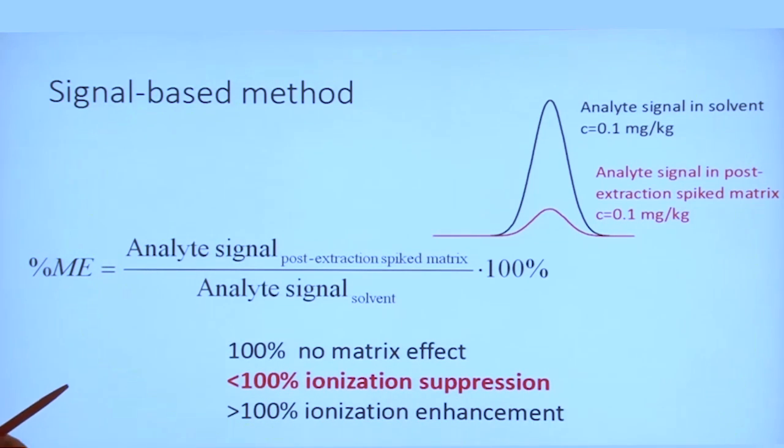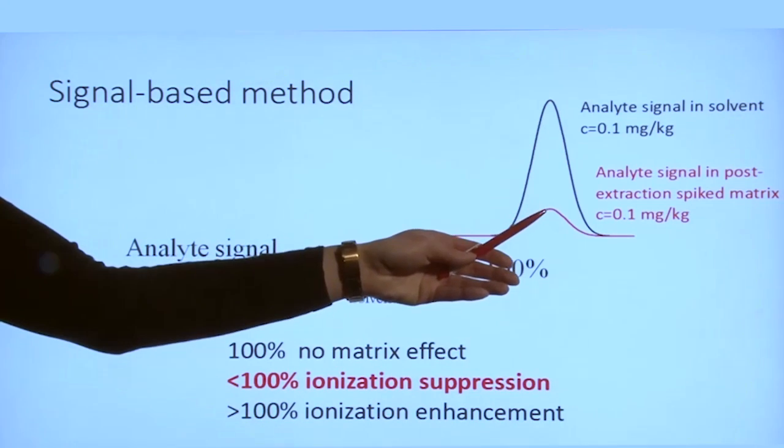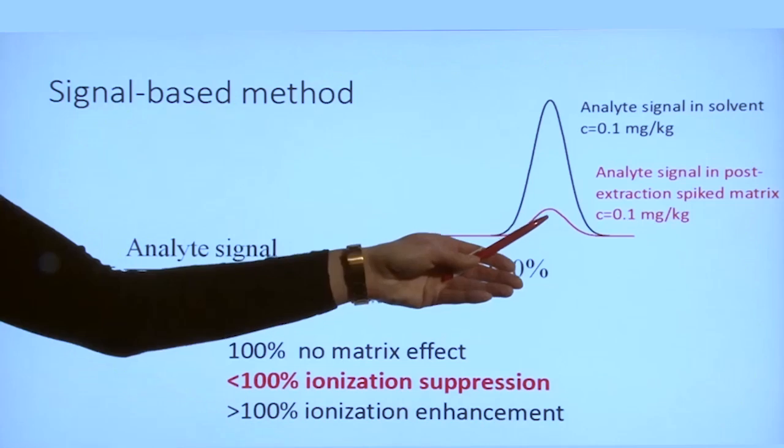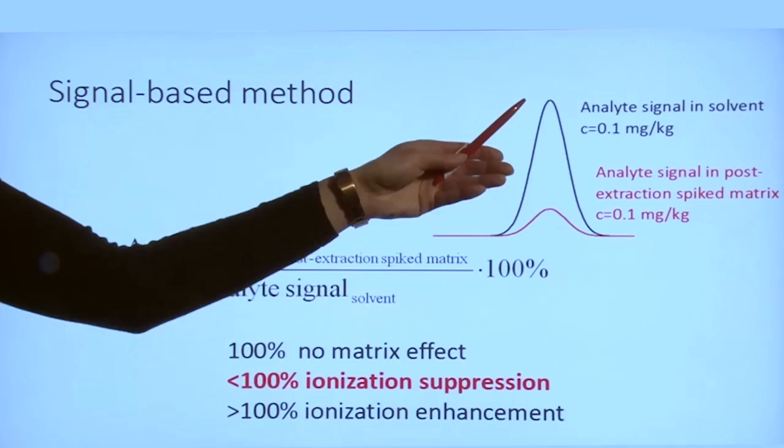However, matrix effect as ionization suppression may also be present. This means that the signal obtained for the post-extraction spiked sample is significantly smaller than the one observed for the standard.